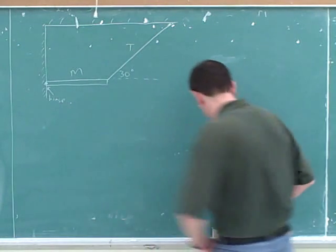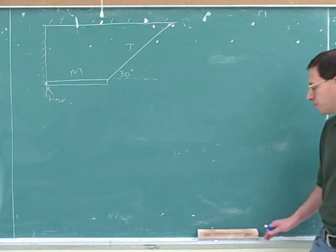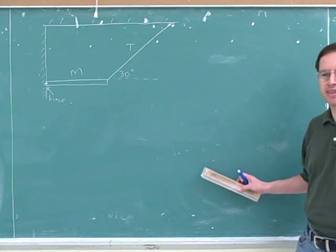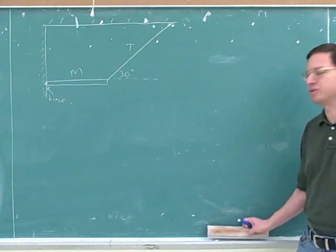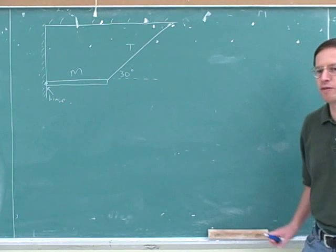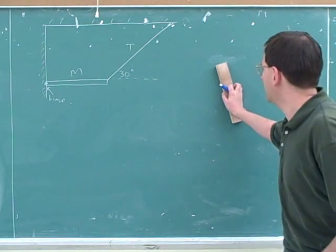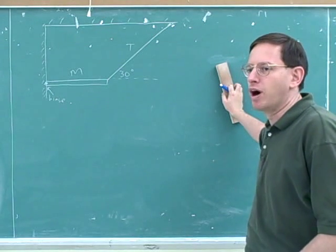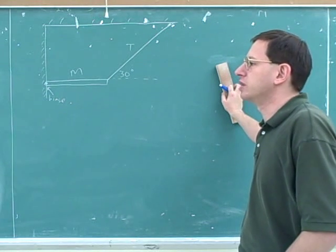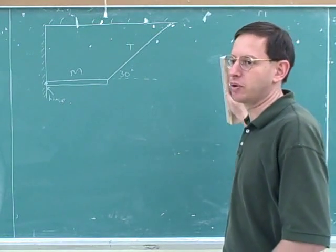For example, gravity is trying to pull down this eraser, so there must be something in this little ledge that prevents that — and that's the normal force, pushing up. Would the normal force here ever pull down? No. There's nothing to stop me from picking the eraser up. But if I push down on it, the normal force increases. If I try to push the eraser into the blackboard, the normal force pushes away from the blackboard — but it would never pull toward it.